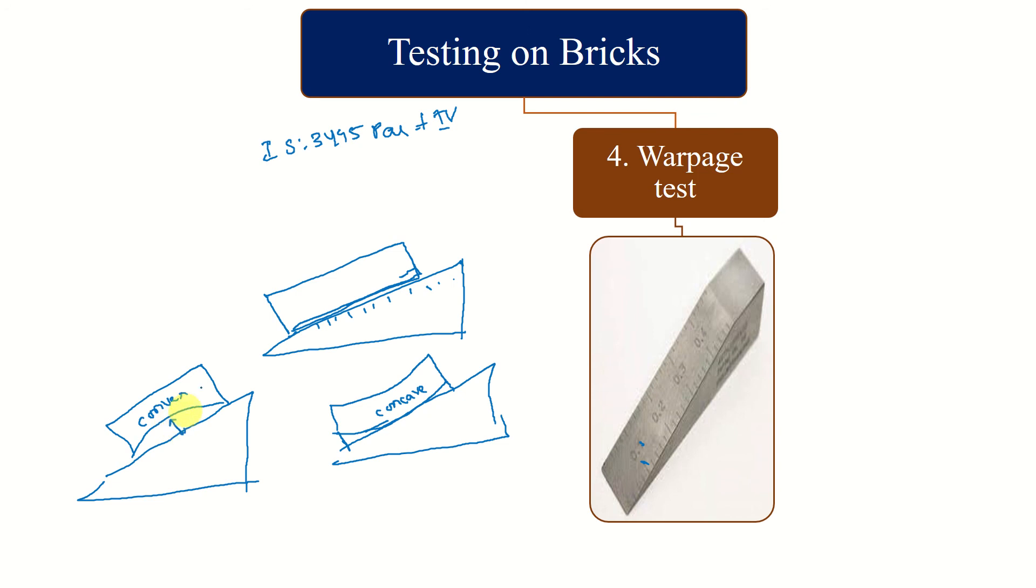The same brick will be placed in reverse, so it will appear like this - that is convex. This gap is also measured. Warpage is reported as the greater value of the gap between convex gap and concave gap. This is very important because during burning, warpage may take place due to some constituents. That is all about warpage test.